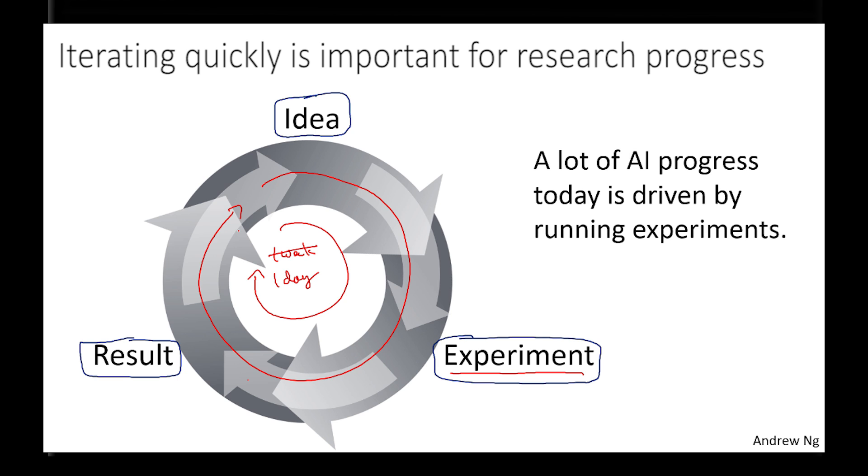Today, I find a lot of progress in AI is driven by empirical work. In other words, by running experiments in which we just don't know what's going to work. We just have to run an experiment, get a result, learn from that, and then move on. And your ability to iterate quickly was a common concept in Silicon Valley, but this is maybe that concept applied to machine learning. But the ability to iterate quickly really makes you much more productive as a researcher or as a research team.